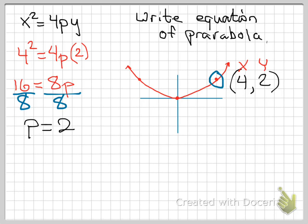So now I'm going to go back up into this equation, pull out the p, and put 2 in there instead. So we would end up with x squared equals 8y. And that would be the equation of that graph.